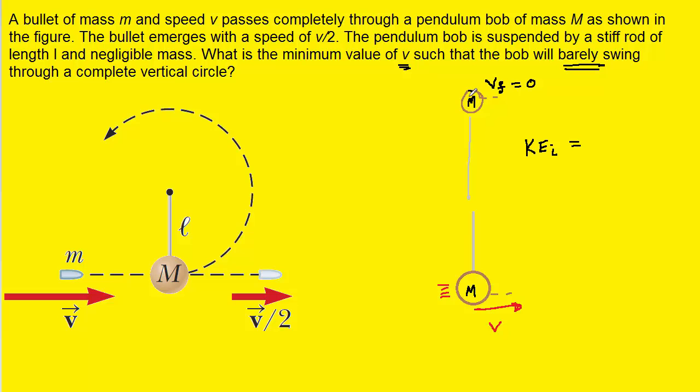And then once it reaches the top of its circle, because it's not moving any longer, there is zero kinetic energy. But there is gravitational potential energy because the bob is now located at some height from its original position. And because of that height, it has that gravitational potential energy.